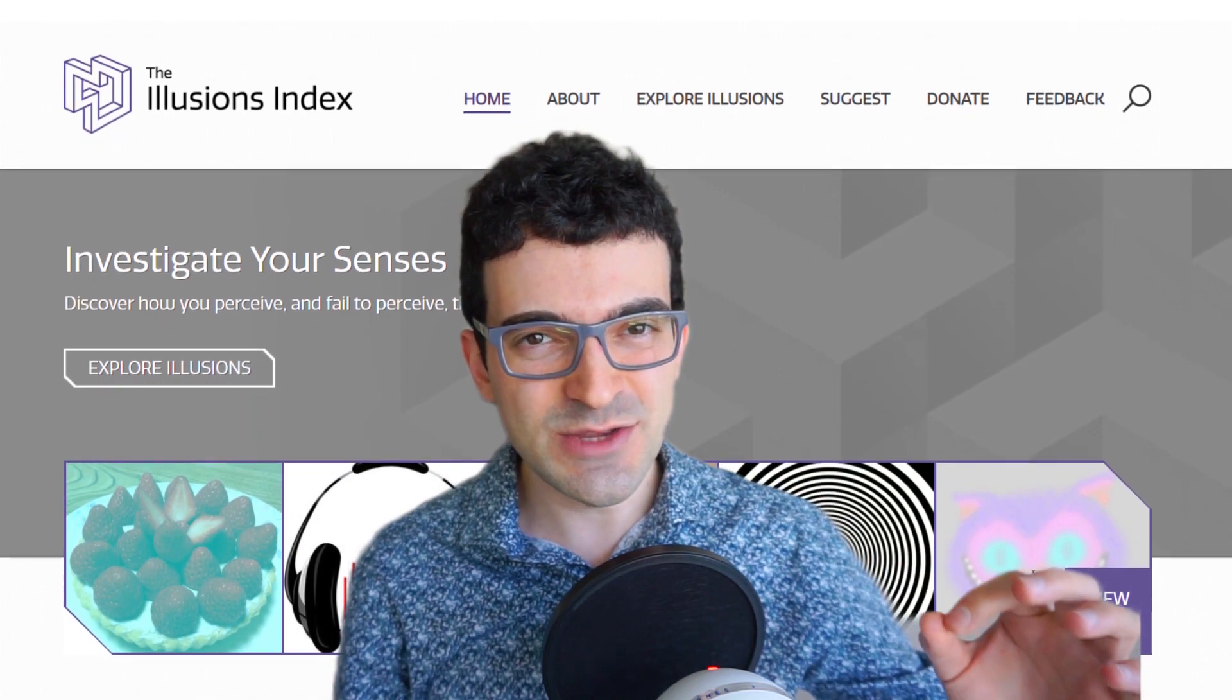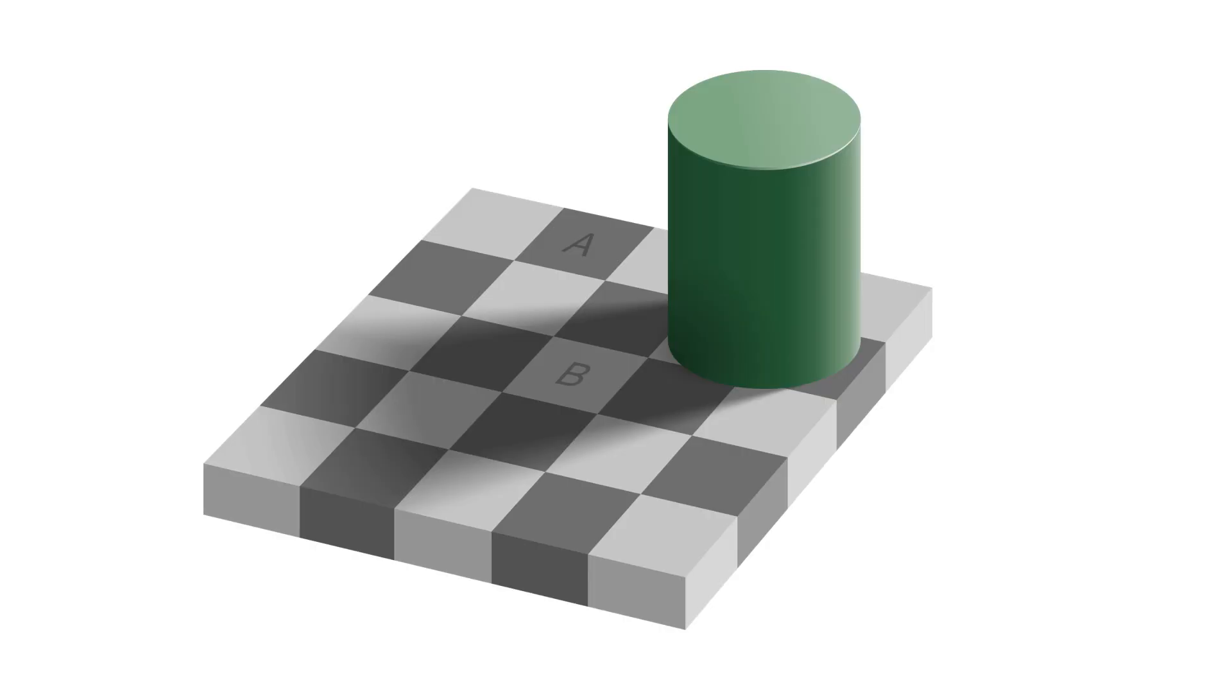We call it an illusion when things appear to be different from how they really are. Take a look at this very famous checkered shadow illusion for example. The area labelled as A looks darker than the area labelled as B. However, they are both the identical shade of grey. Grey appears white if it's in shadow and it appears black if it's under bright light.